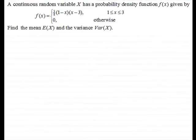Hi. Welcome to this example on finding the mean and variance of a continuous random variable. What I've got here is an example: a continuous random variable X has a probability density function f(x) given by f(x) equals 3 quarters of (1-x)(x-3), where x is between 1 and 3 inclusive, and it's 0 otherwise. We've got to find the mean E(X) and the variance Var(X).